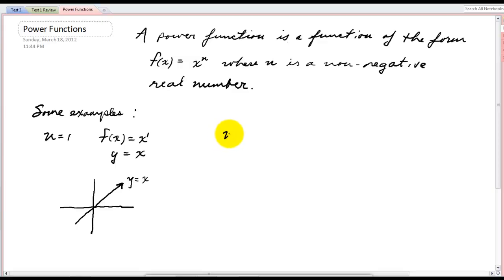Here's another one. If n equals 2, we have our basic squaring function, and we know that that thing looks like this pretty much, going through 0,0, 1,1, 2,4, negative 1,1, negative 2,4, and there you have it.